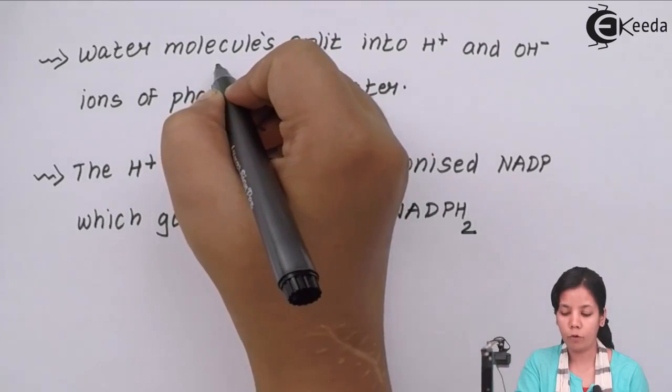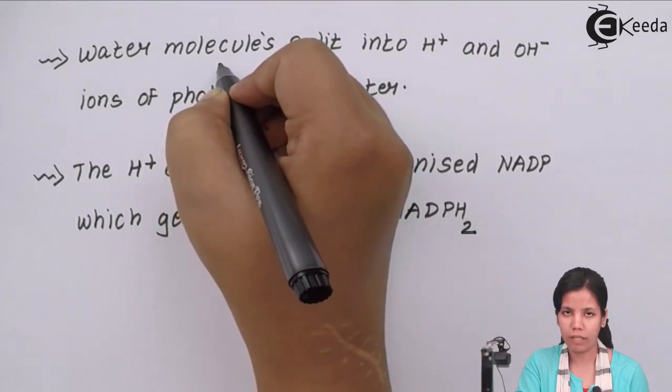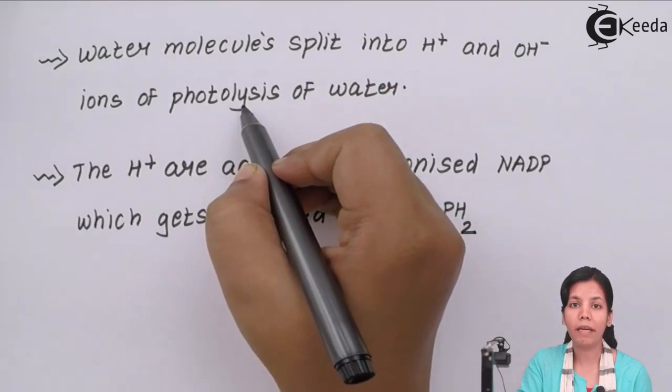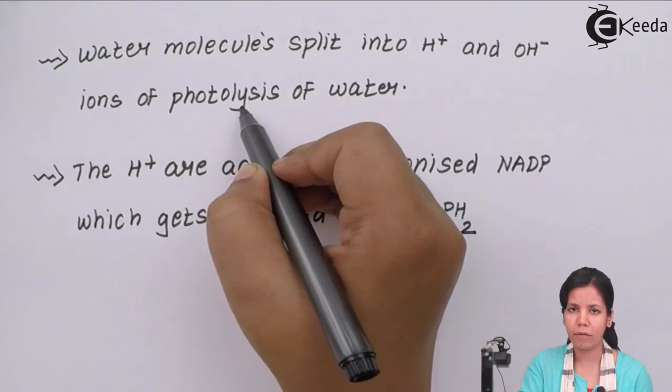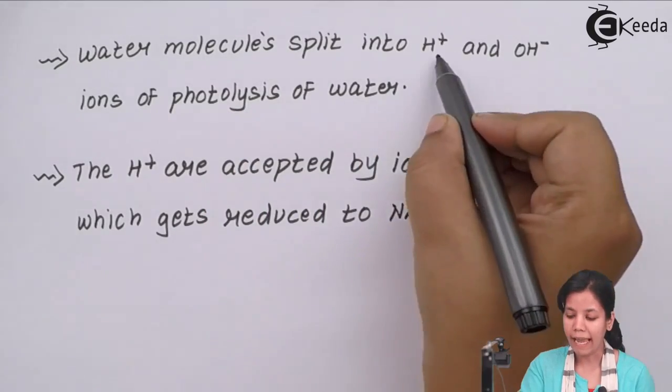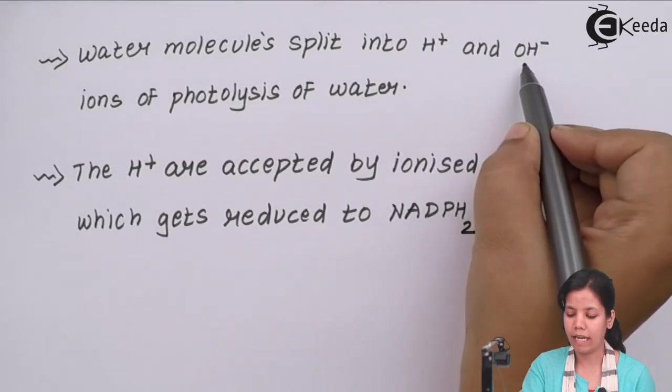During non-cyclic photophosphorylation, one of the most important things that happens is photolysis of water or you can say breakdown of water molecules in the presence of sunlight, and this photolysis of water generates H plus and OH minus ions.